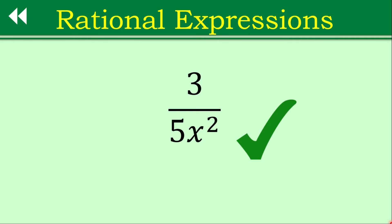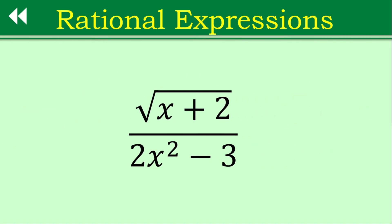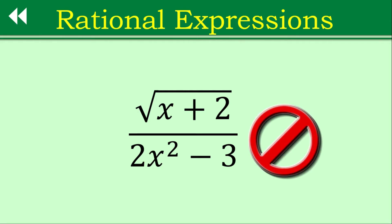Let's continue with the third example. Is this a rational expression? The answer is no — not anymore. Why? Based on our lesson number one, this is not a polynomial function. The numerator is not a polynomial because of the presence of a radical sign, though the denominator is an example of a polynomial — it's a binomial, to be exact. The radical sign in the numerator makes this example not a rational expression.